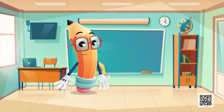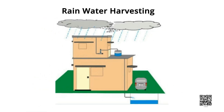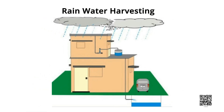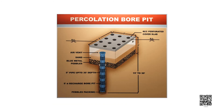A very interesting and important method is rainwater harvesting. One way of increasing the availability of water is rainwater harvesting. The most important technique is to make rainwater seep into the ground more efficiently by constructing percolation pits and recharge wells, so as to recharge groundwater. This water can be pumped out in times of water shortage.